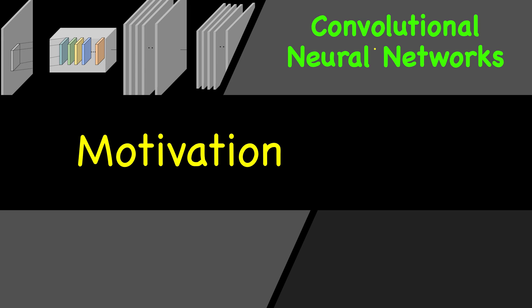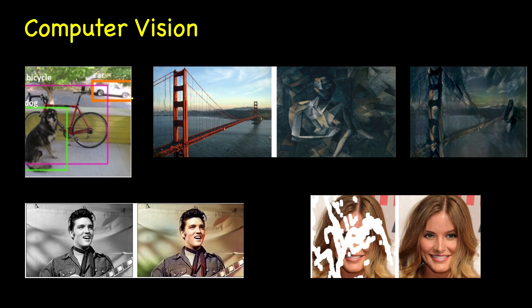One of the simple applications of computer vision where deep learning is doing superb is object classification. Object classification means given an image — let's say you want to find whether this image is of a cat or a dog — that is called simple image classification.